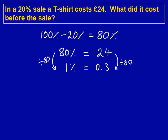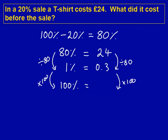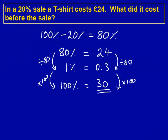We can now use this 1% to work out what 100% is. We need 100%, so we multiply by 100. We do this to both sides. 0.3 times 100 is 30, so 100% is £30. Therefore our answer is £30 — before the sale happened, the t-shirt cost £30.